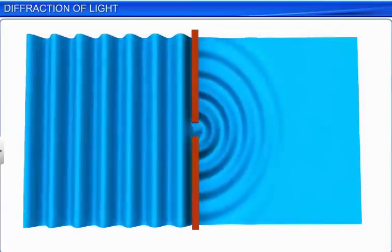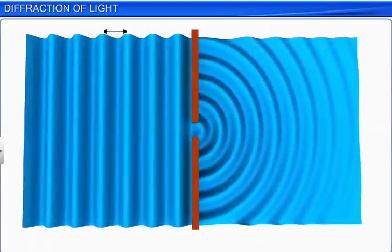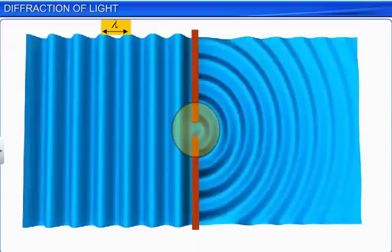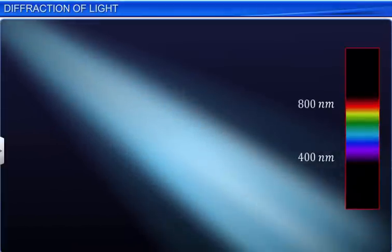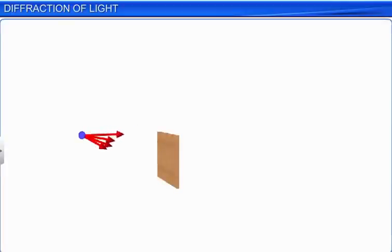The diffraction of waves depends on their wavelength. If the size of the obstacle or the slit is of the order of the wavelength of the incident waves, then diffraction occurs. This condition is also applicable to light waves. The wavelength of visible light is in the range of 400 to 800 nanometers. Since the wavelength of visible light is much smaller than the dimensions of most obstacles it encounters, we usually do not observe any diffraction.